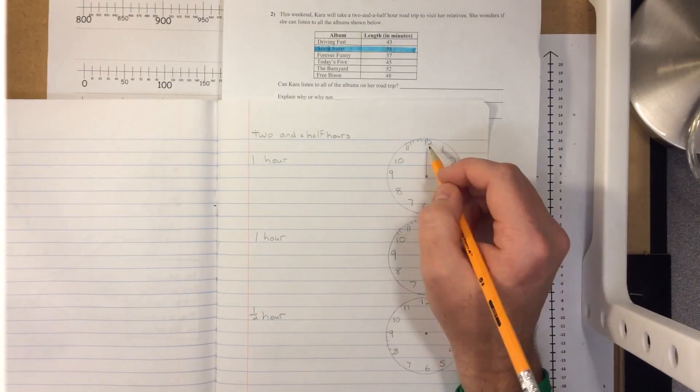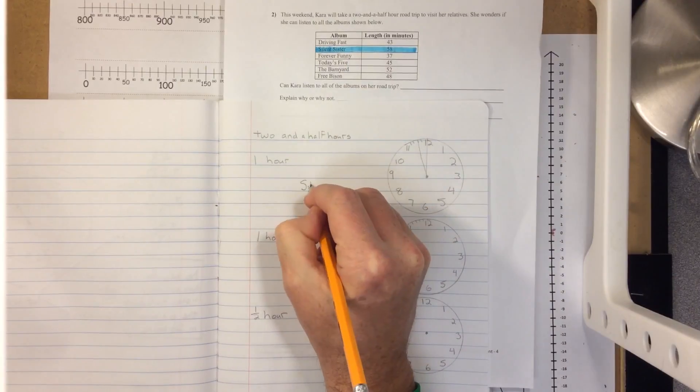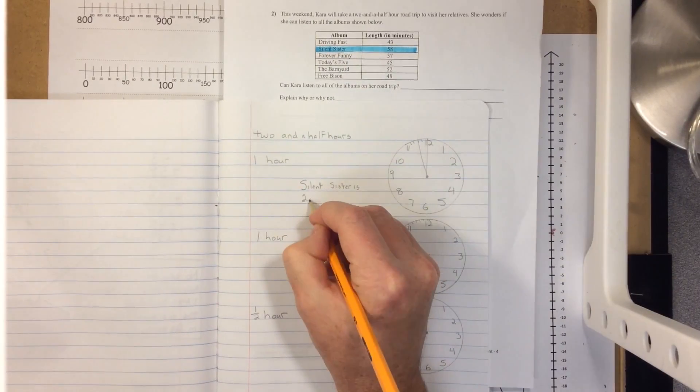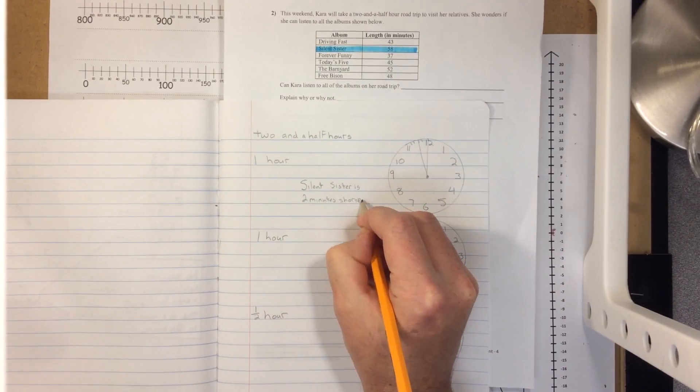We can compare Silent Sister with one hour and find that it's two minutes shorter than one hour. So it's 58 minutes long, it's two minutes extra.